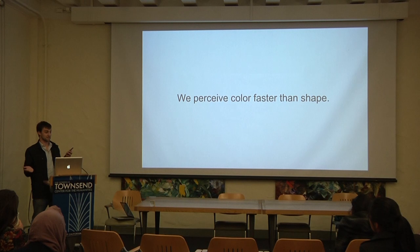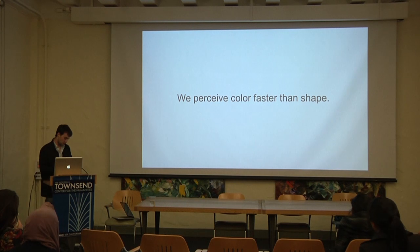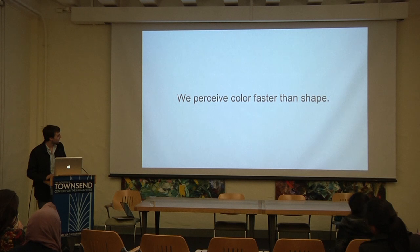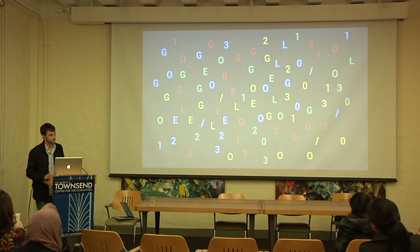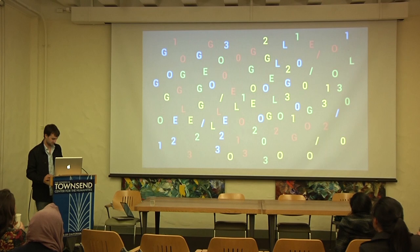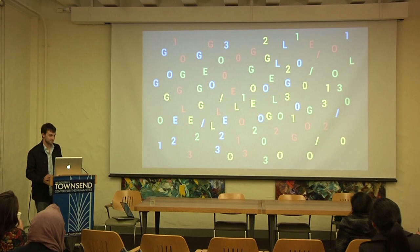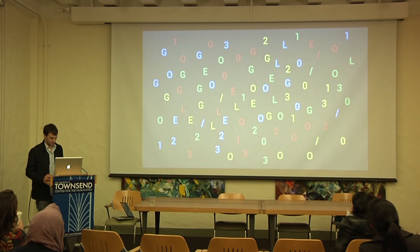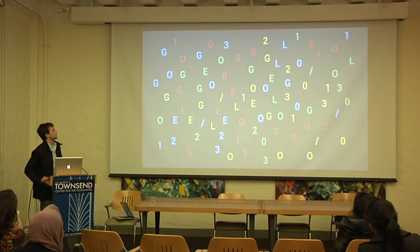That took about seven seconds — pretty good. Now I'm going to ask you one more thing: how many of them are G's? It's 16 — there are actually more of them than just the red ones, but because of the way our minds work and because we perceive color faster than shape, finding G's is significantly harder and takes much longer.